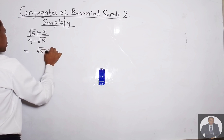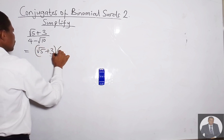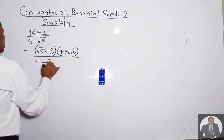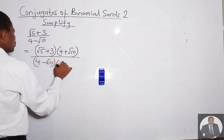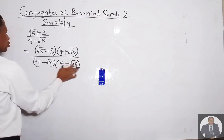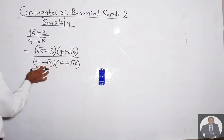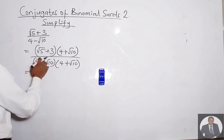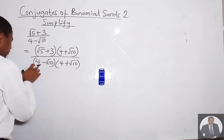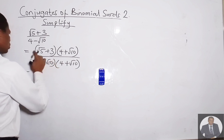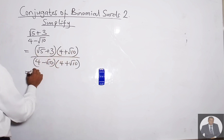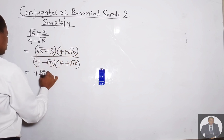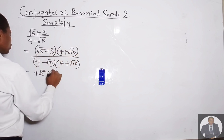So we multiply: (√5 + 3) times (4 + √10), over (4 − √10) times (4 + √10). The denominator gives us the difference of two squares: 4 squared minus (√10) squared. Expanding the numerator: √5 times 4 is 4√5, √5 times √10 is √50, and 3 times √10 is 3√10.